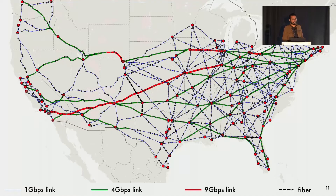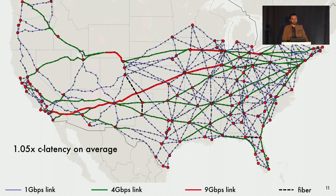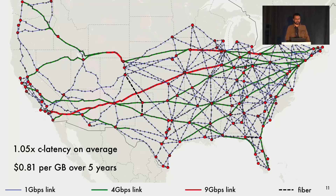Here's the output design zoomed in. The red dots on the map are population centers. The smaller gray dots are microwave towers. The blue, green, and red lines are links of up to 1, 4, and 9 Gbps capacity. The dashed line is fiber. Our optimizer picks fiber when it cannot find existing towers for a lower latency microwave link. This network will provide an average latency inflation of just 5% over the theoretical lower bound. The cost of this network, amortized over five years of operation, comes out to be 81 cents per gigabyte.